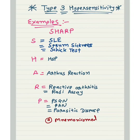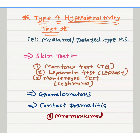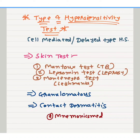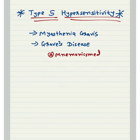Now we will learn about Type 4 hypersensitivity reactions. It is also called cell-mediated or delayed-type hypersensitivity reaction. Examples include skin tests: Mantoux test for TB, lepromin test for leprosy, Montenegro test for leishmaniasis, and also granulomatous disease and contact dermatitis. You have to remember all these examples of Type 4 hypersensitivity reactions.